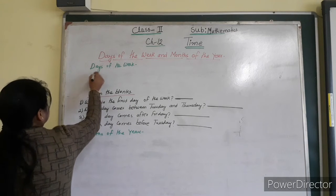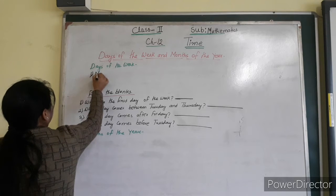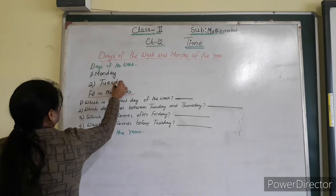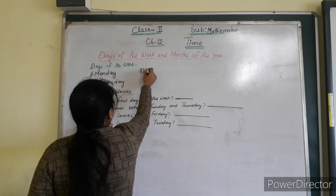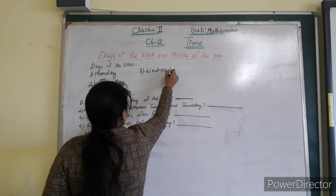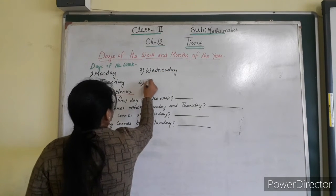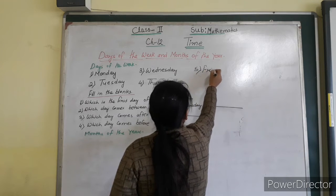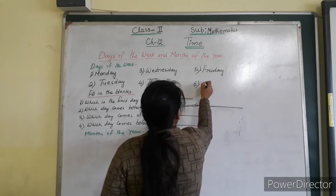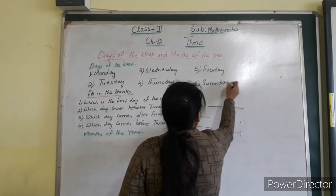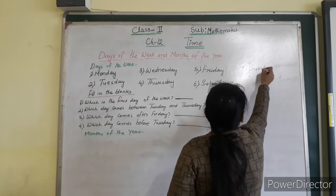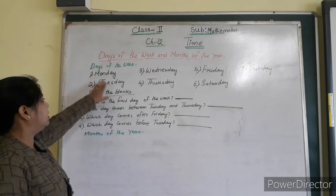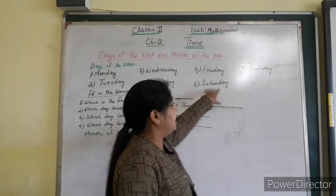Let's start. The days of the week: Number 1 is Monday, then Tuesday, Number 3 is Wednesday, then Number 4 Thursday, then Number 5 Friday, Number 6 Saturday, and Number 7 is Sunday. Please don't confuse. You have to write: Monday, Tuesday, Wednesday, Thursday, Friday, Saturday, and Sunday.